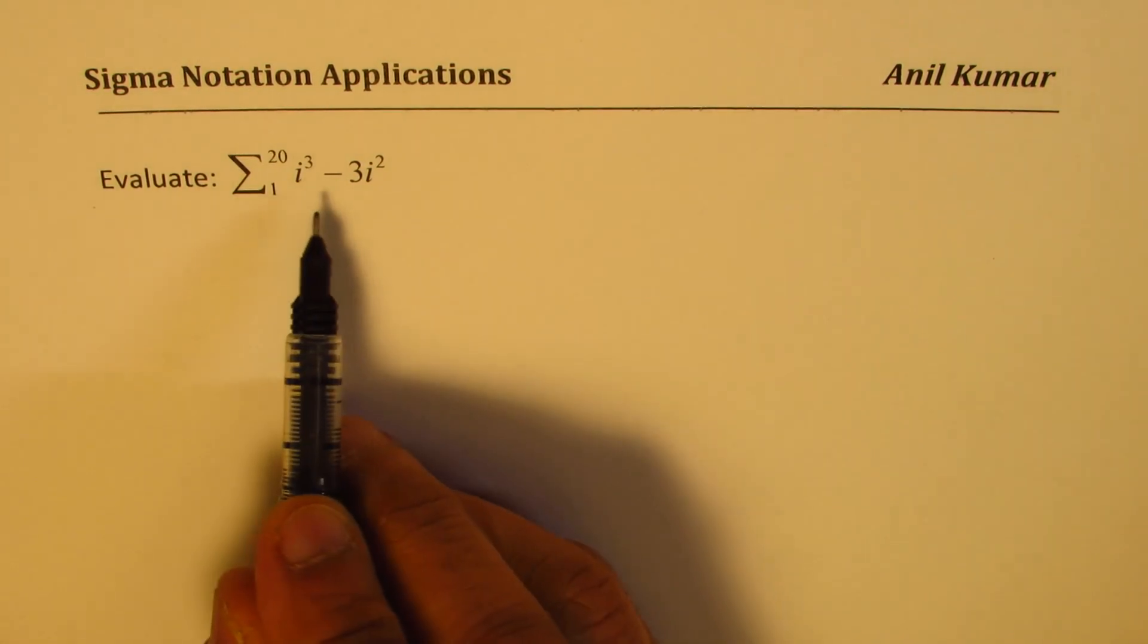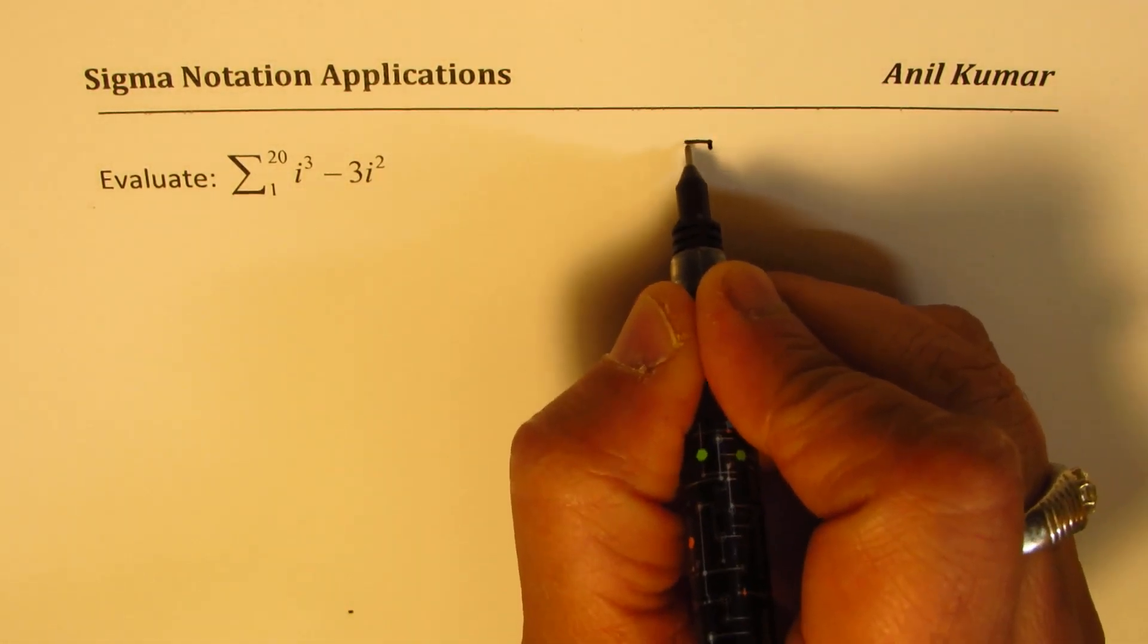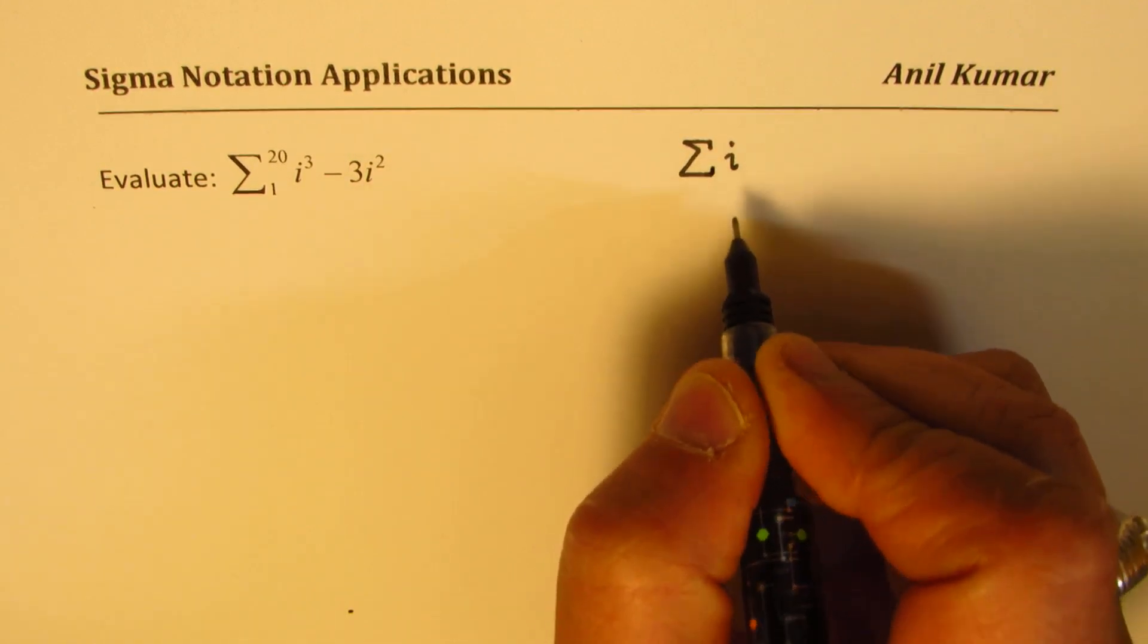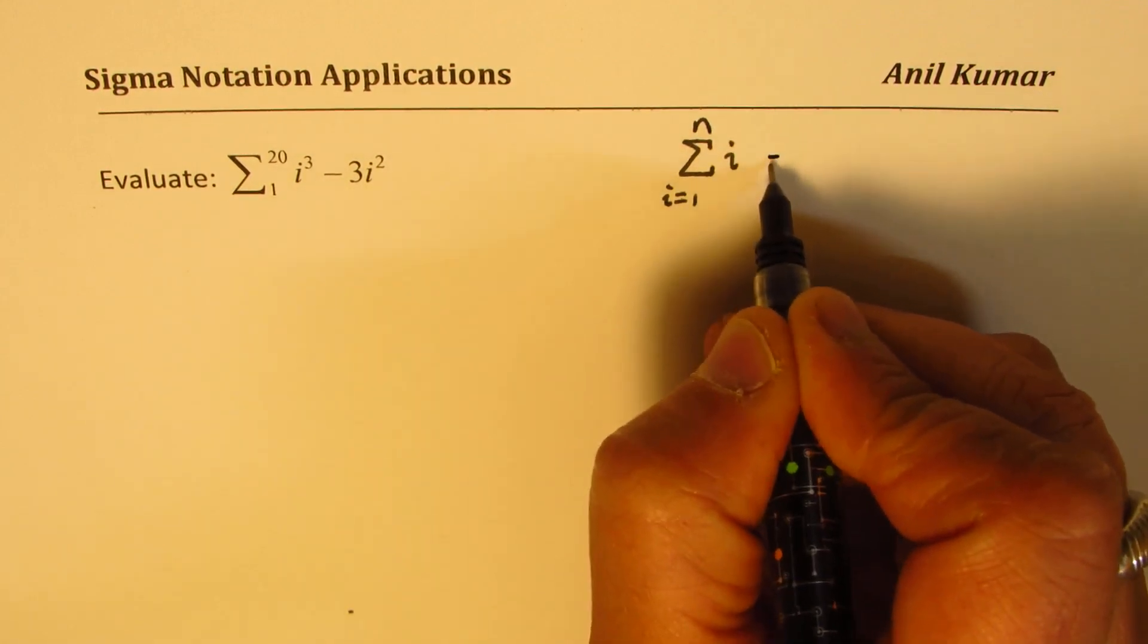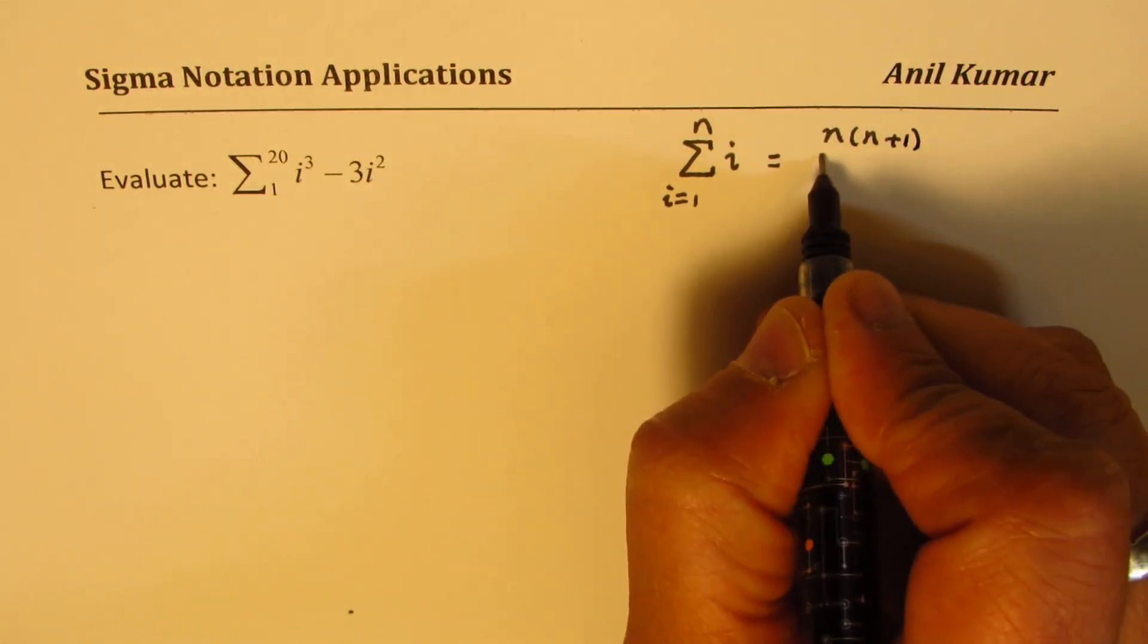So we need to know two formulas. One is what is sum of natural numbers. So that is one formula which you need to know. Sum of natural numbers when i changes from 1 to n is given to us as n times n plus 1 over 2.